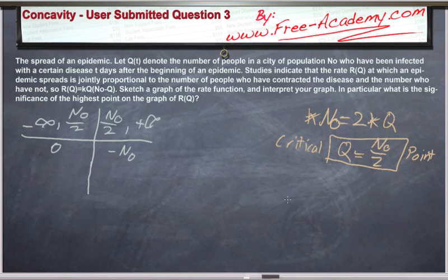And I was just a genius there, and I want to erase my derivative. R prime is equal to k n0 minus 2kq. So let's use zero and n0 as their test values, because they're really nice and convenient. This is k n0. We'll plug them in. If we do R prime of zero, we get positive k n0.